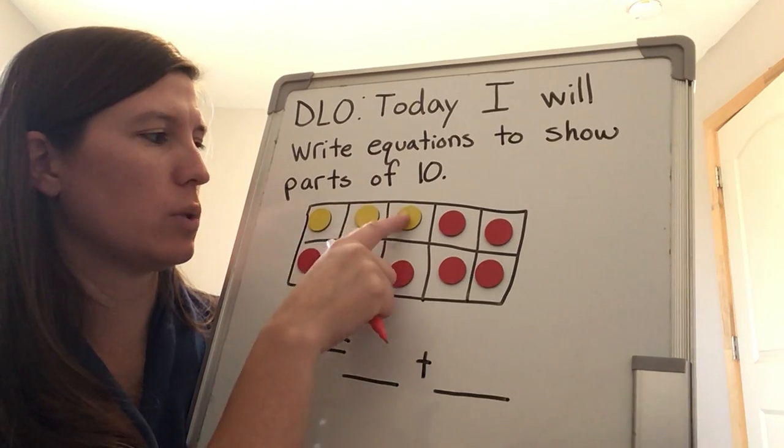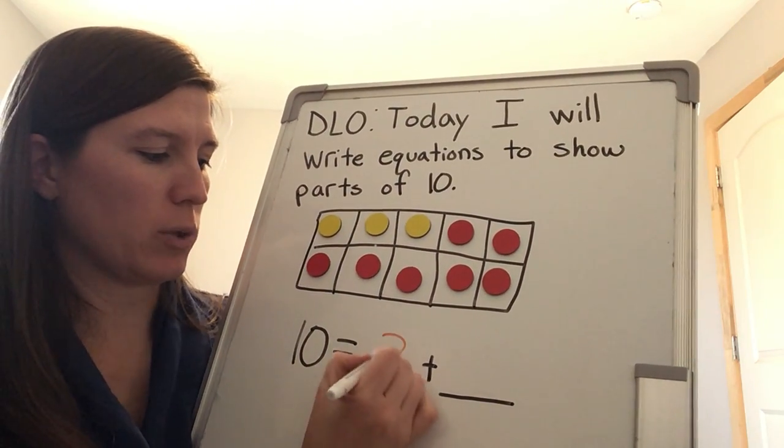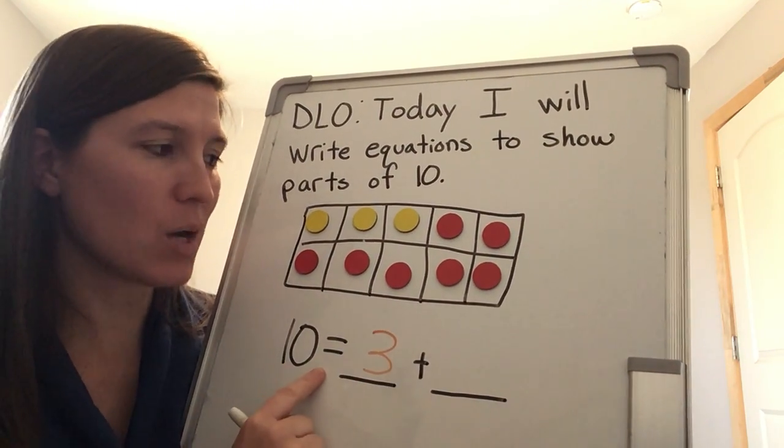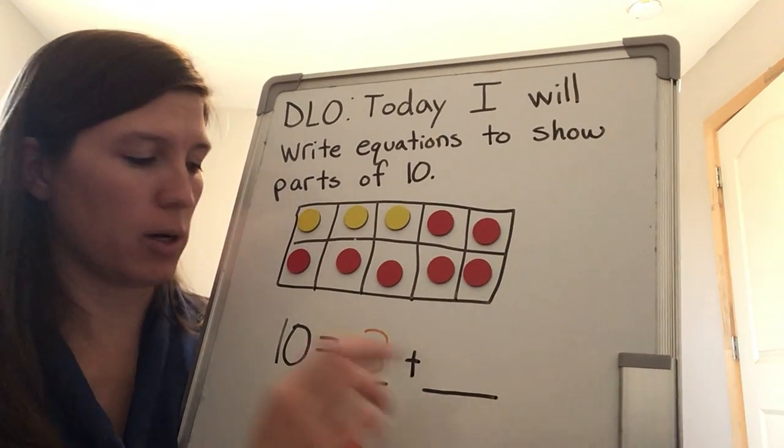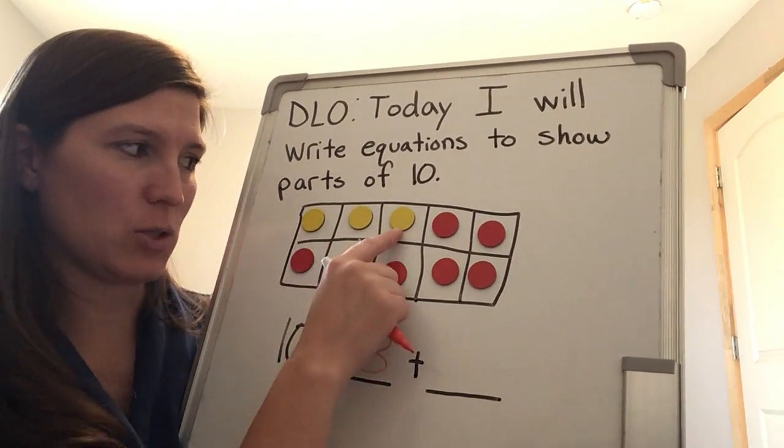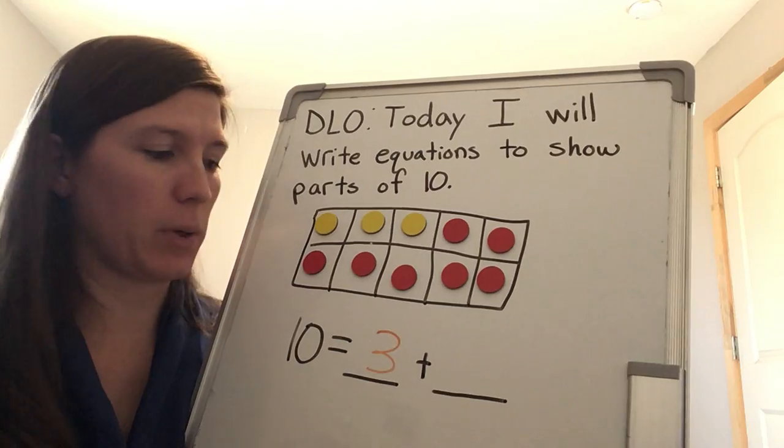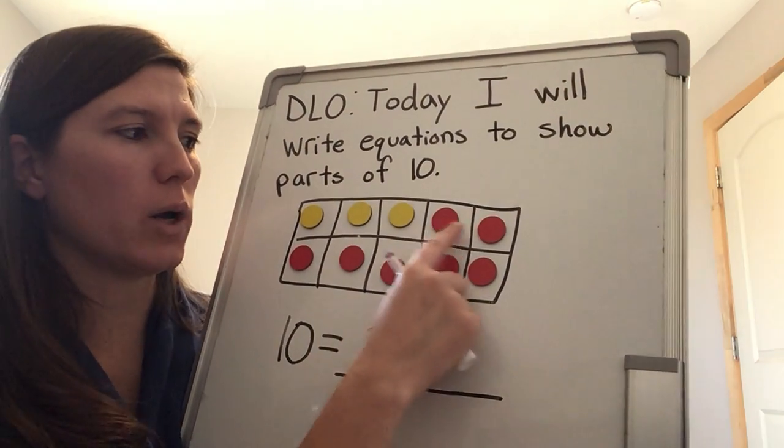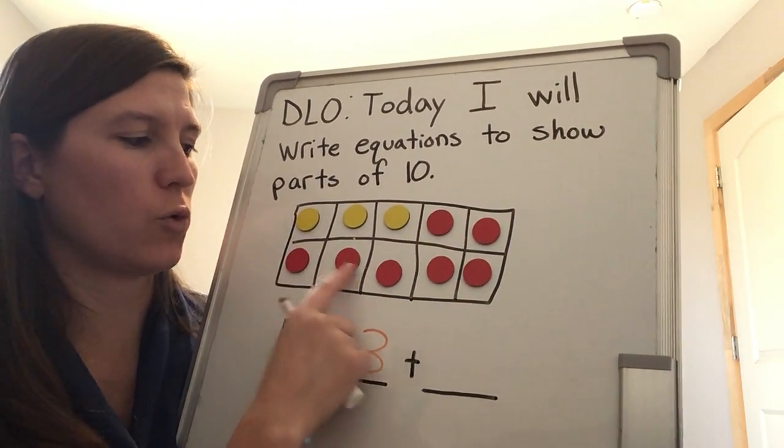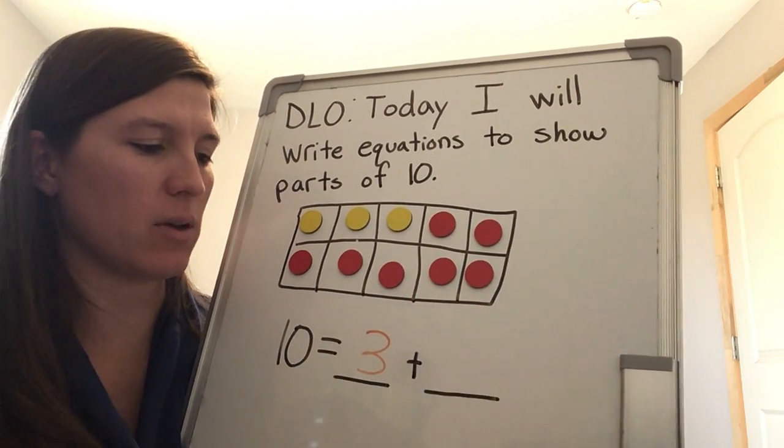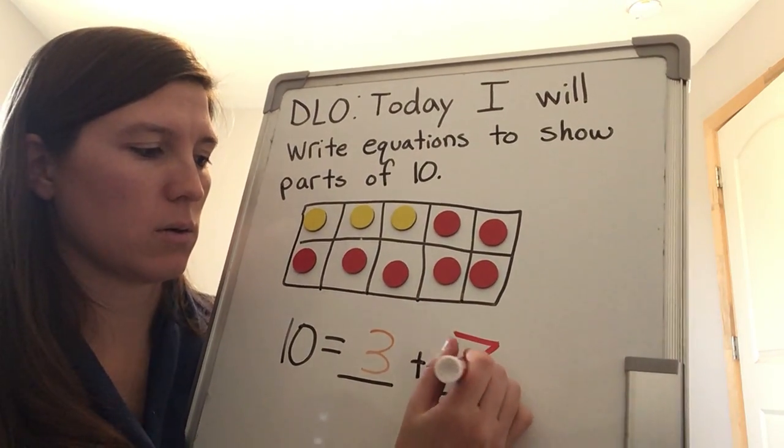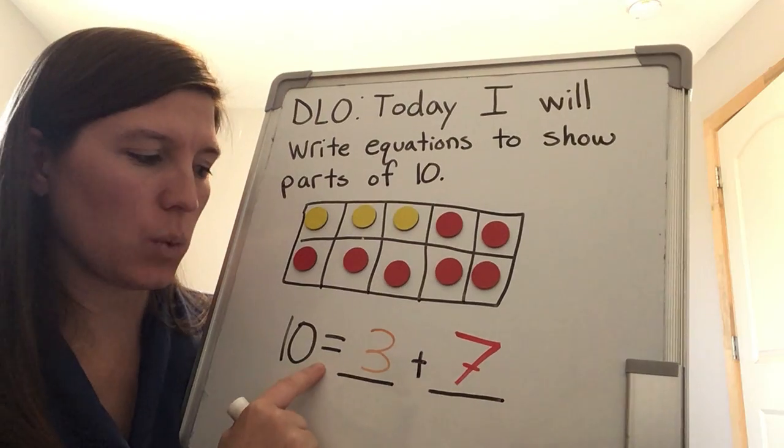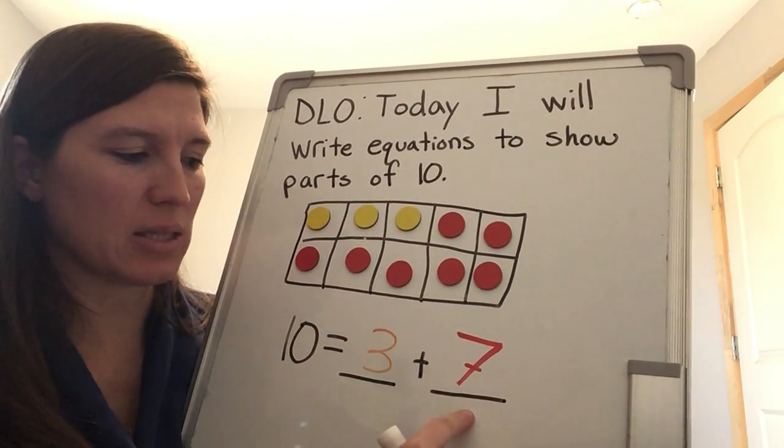I wrote parts of 10 to show parts of it. Two parts. I have my yellow part and my red part. I'm going to fill in my blanks down here with how many of each that we have. How many yellow do I have in that first part? Let's count. One, two, three. So I'll put the number three here because 10 equals the two different parts. The first part is three. Okay, my next part. Let's count. One, two, three, four, five, six, seven. 10 equals three plus seven.